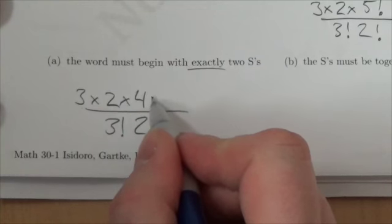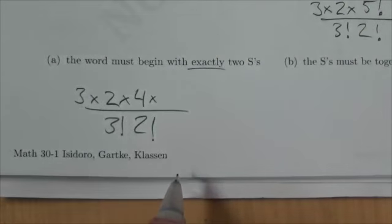It turns out there are four options for me. There's the U, the C, the C, and the E.